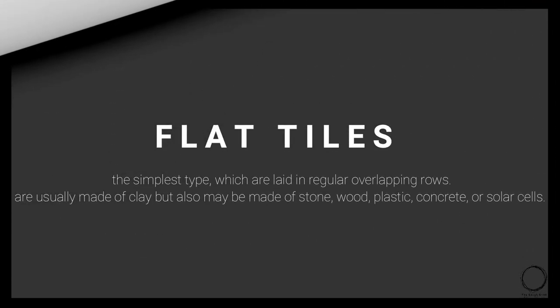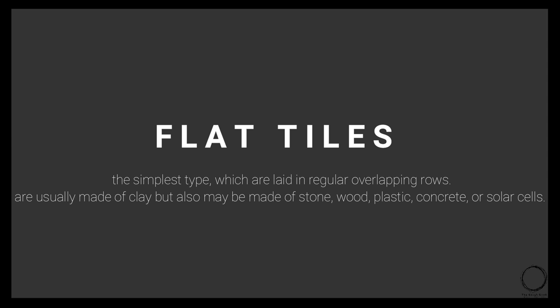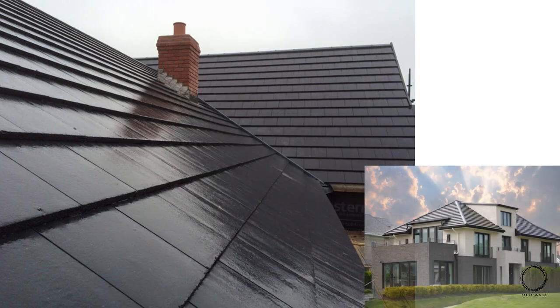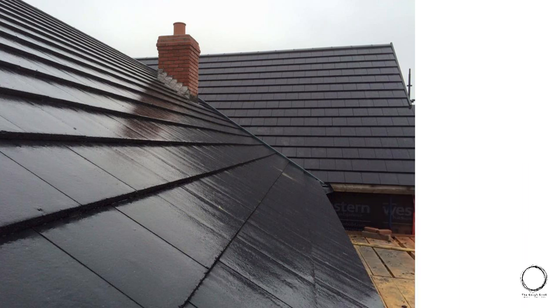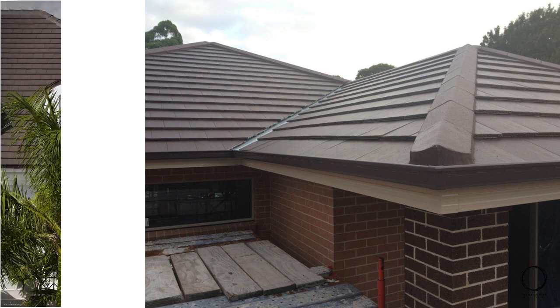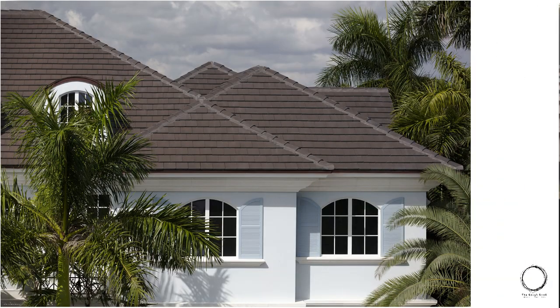The next type is flat tiles — the simplest tile, laid in regular overlapping rows. They are usually made of clay but may also be made of stone, wood, plastic, concrete, or solar cells. A flat tile roof offers a crisp, clean appearance that complements both traditional and modern architecture and is increasingly popular with designers, architects, and home buyers.